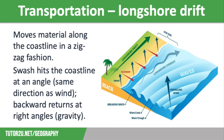However, there is one process of transportation that is specific to coastal landscapes — this is longshore drift. It is the movement of material along the coastline in a zig-zag fashion. Waves hit the coastline at an angle, in the same direction as the wind, so the swash goes onto the beach at an oblique angle. Once the waves break, the backwash returns to the sea at right angles to the coastline due to gravity. This movement is repeated, transporting material from one end of the beach to the other, as shown in the diagram on the screen.